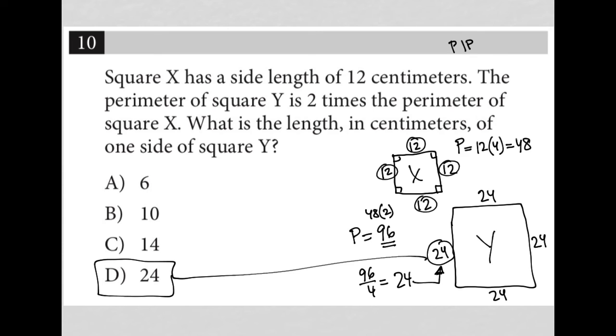So even if you had followed truly how the question was worded and went to the perimeter first for square X, then the perimeter for square Y, and then kind of divide by 4 to figure out what each individual side is equal to, we get to 24 anyway.